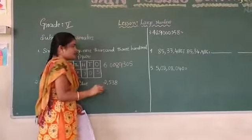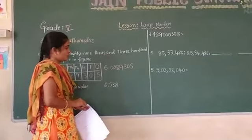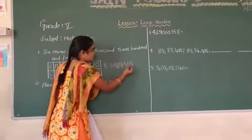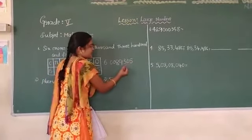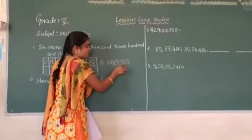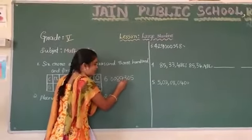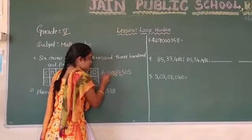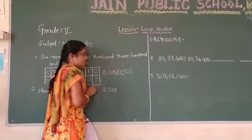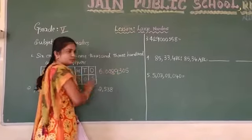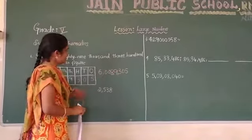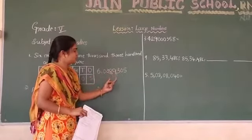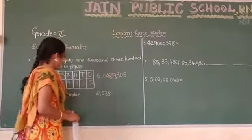Is it correct to read the number as written? No. In the Indian system, we have to place the comma after 3 digits from the right, then after every 2 digits. So the pattern is 3, 2, 2. Here 6 crore 89,300 and 5.